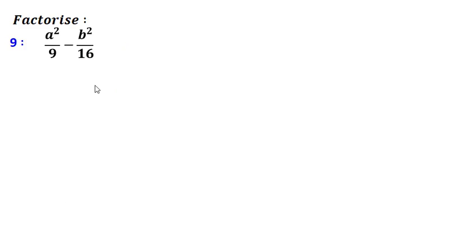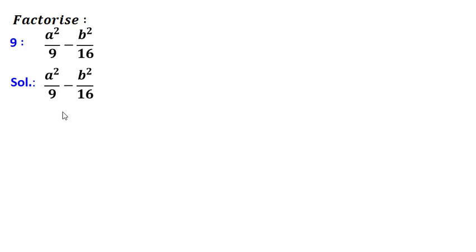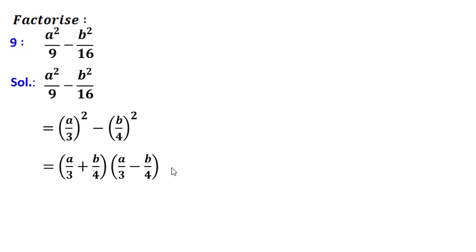Ninth question is a squared upon 9 minus b squared upon 16. This can be written as (a/3) squared minus (b/4) squared, and its factorization will be (a/3 + b/4) into (a/3 - b/4).